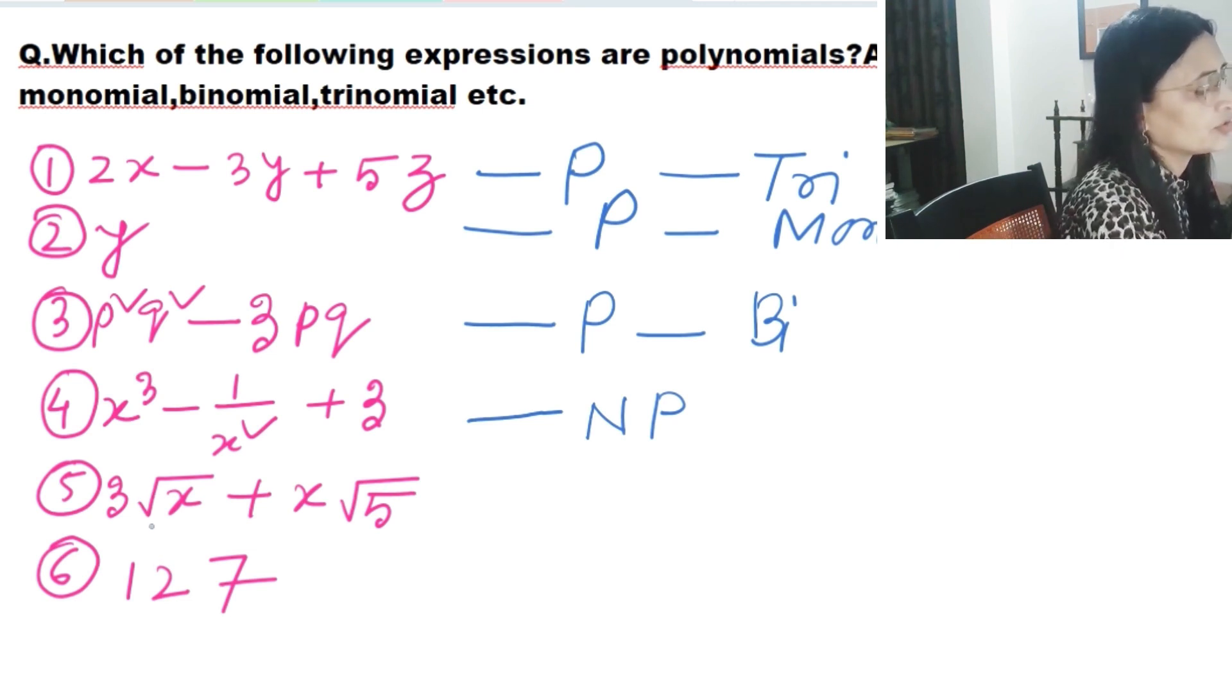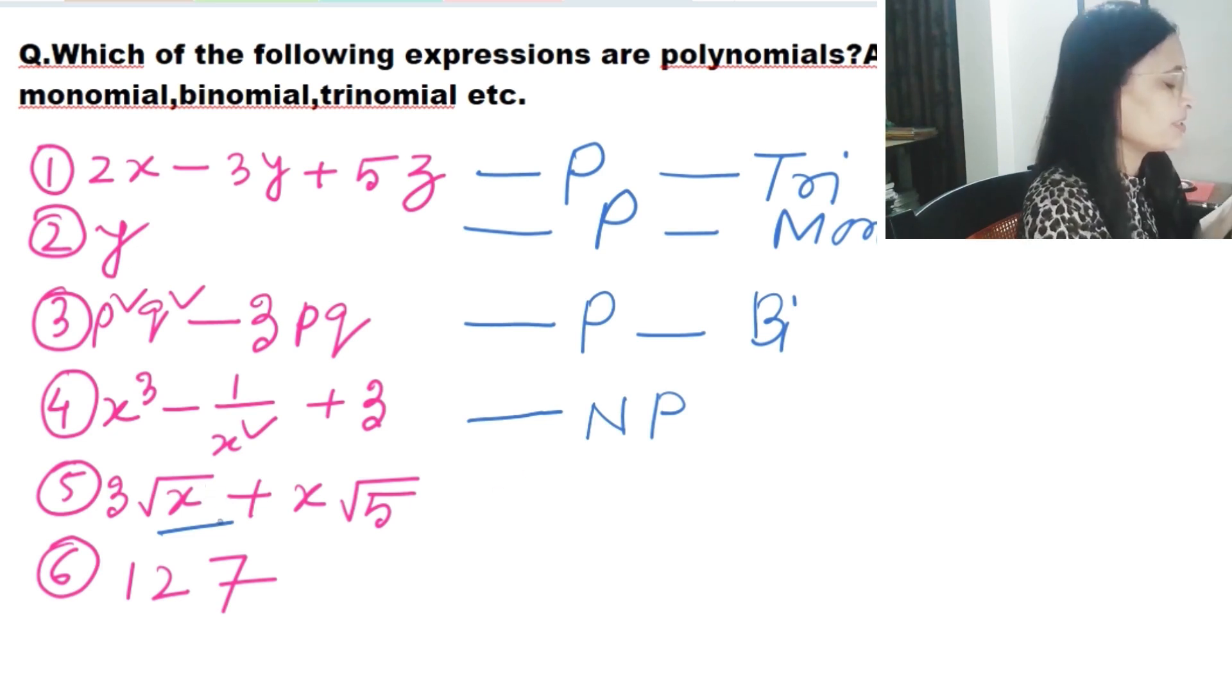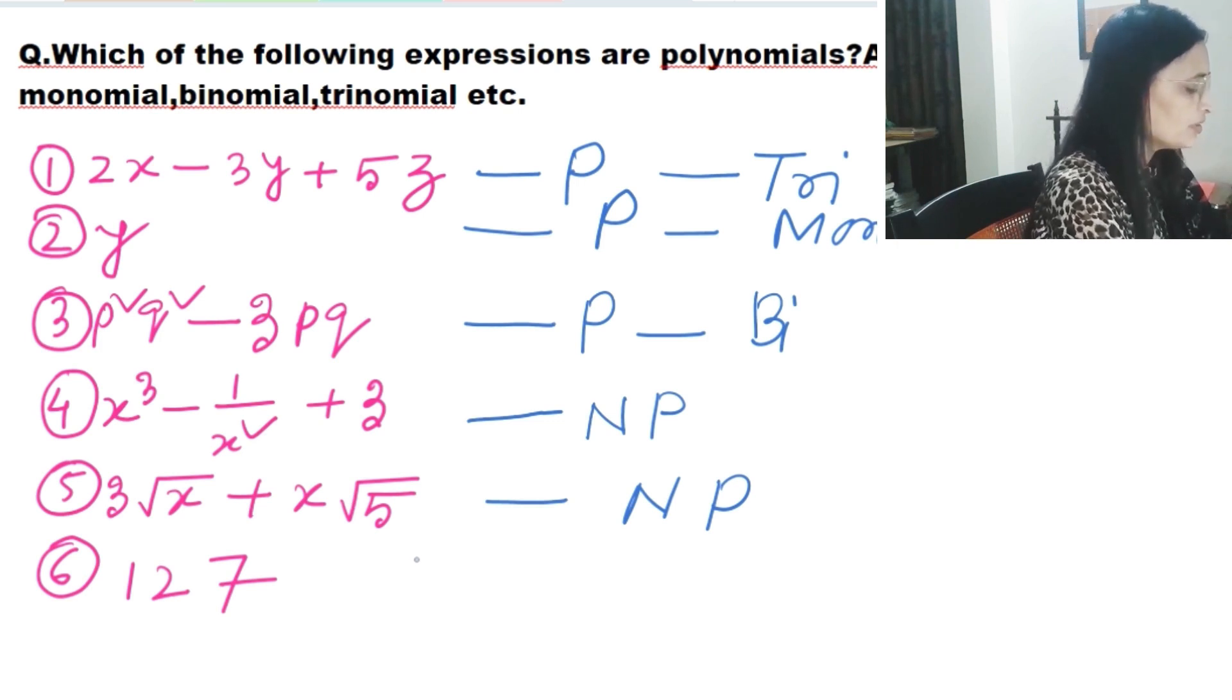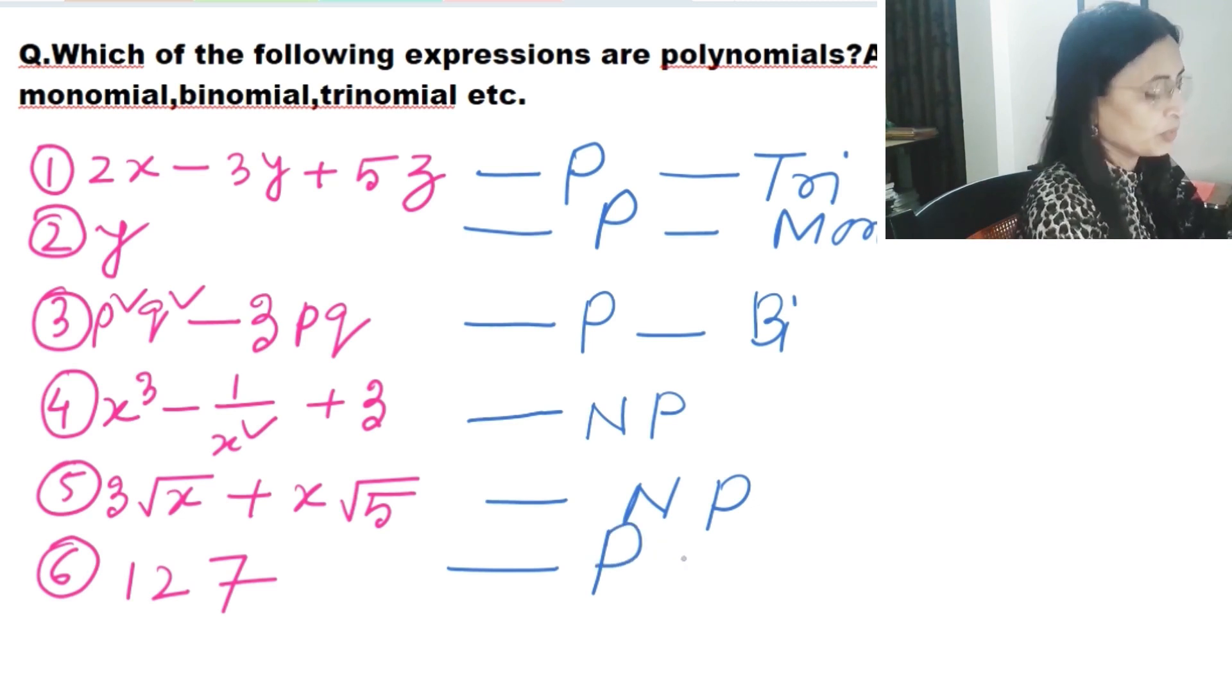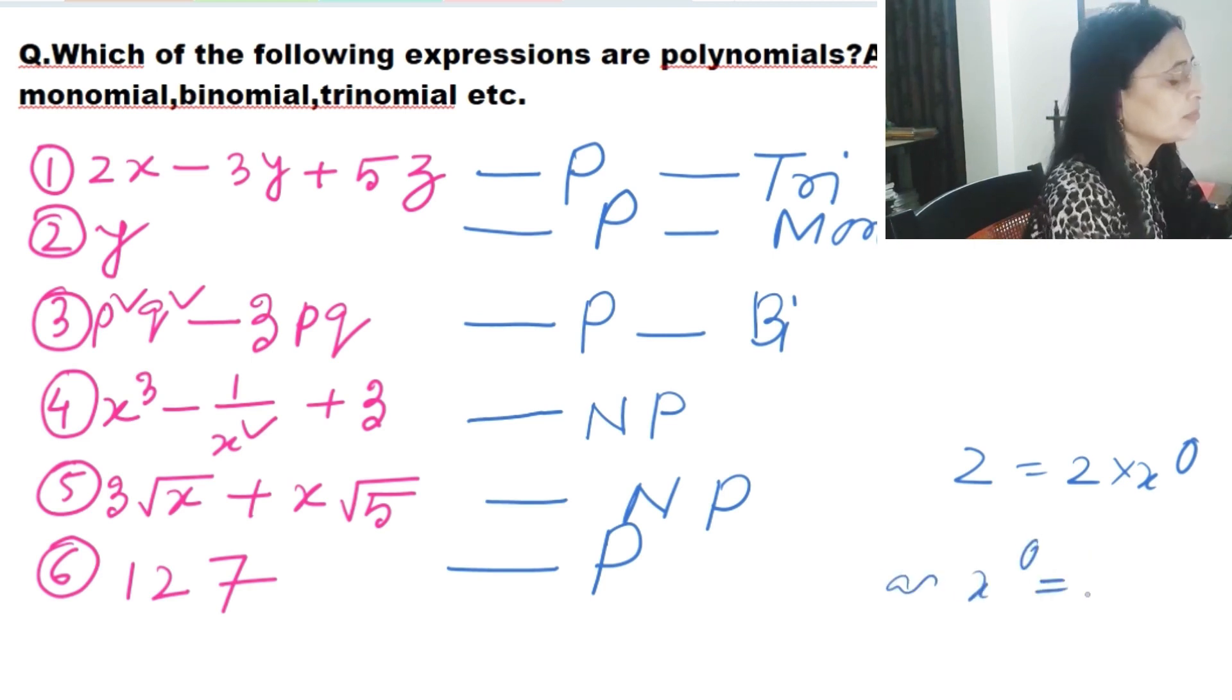In the next case, 3 root x plus x root 5. Here also root x is equal to x to the power half. The power is half, which is again not a whole number. Half is not a whole number, so this one is also not a polynomial. These two expressions, one by x square and 3 root x, are not polynomials. And 127 is obviously a polynomial because 127 we can write like 127 into x to the power 0, because x to the power 0 equals 1 and 0 is a whole number. These are called constant polynomials. 127 is a constant polynomial, a monomial. So I think all this concept about monomial, binomial, trinomial, and which are polynomial and which are not, all these are clear.